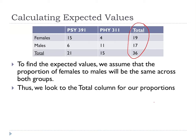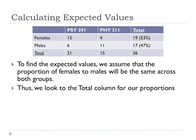We could just as easily look at the proportion of males in each class, but to think about it more logically, I'm going to use the gender ratios in our total sample — and the numbers come out the same either way. We look at the total number of all participants who are female and all who are male. What we found was 53% are female and 47% are male.